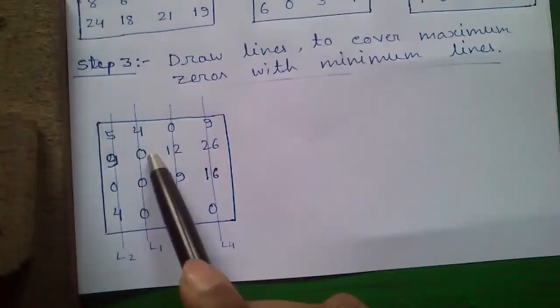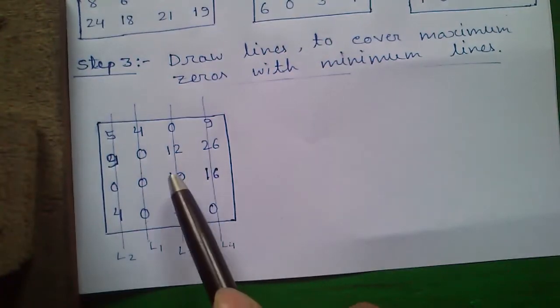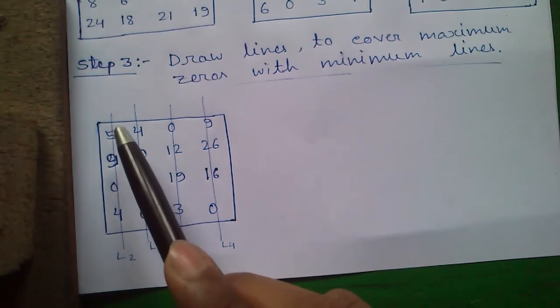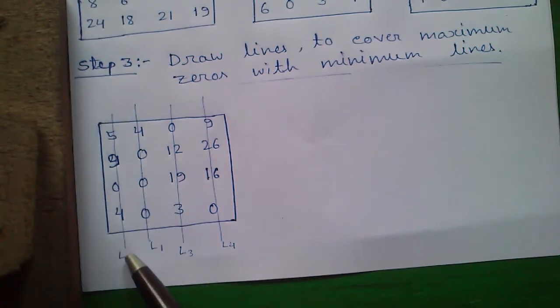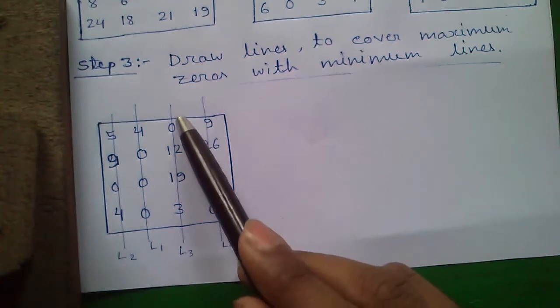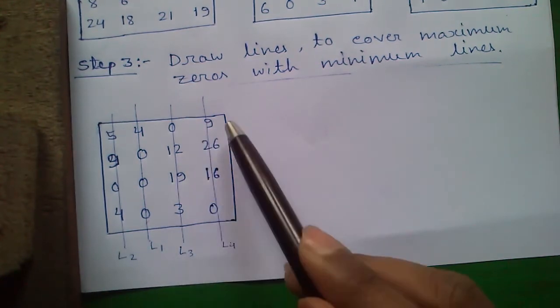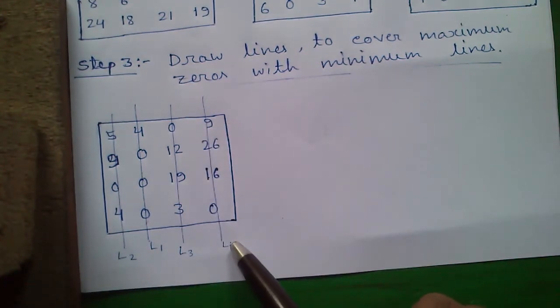But you can see in all the rows and columns there is only a single zero, so we can draw lines arbitrarily. We will draw our second line L2 in column 1, L3 in column 3, and L4 in column 4.